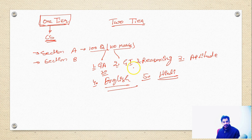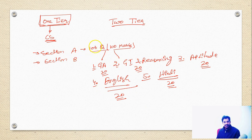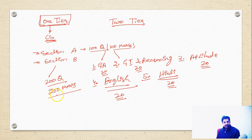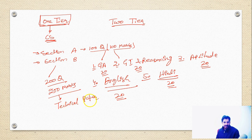There will be 20 questions from each sub-section: 20 from General Awareness, 20 from Reasoning, 20 from Aptitude, 20 from English, and 20 from Hindi — totaling 100 questions in Section A. Section B will have 200 questions worth 200 marks, making the complete paper 300 marks. Section B is entirely a technical paper covering Computer Science subjects.